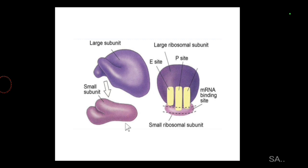In the case of eukaryotic cells, ribosomes are made up of a small subunit and a large subunit. The small subunit is 40S in eukaryotes and is involved in decoding the genetic message brought by messenger RNA. The large subunit, which rests on the small subunit, is 60S in eukaryotes and catalyzes peptide bond formation so that polypeptide chains and ultimately proteins are synthesized.